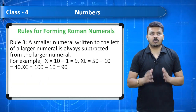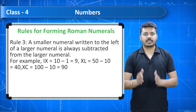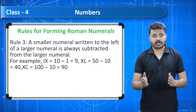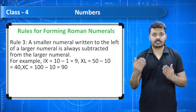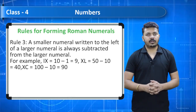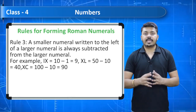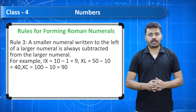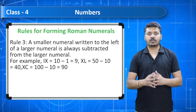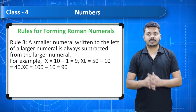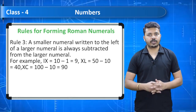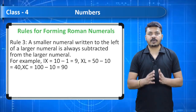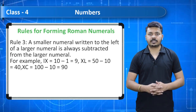Rule 3: a smaller numeral written to the left of a larger numeral is always subtracted from the larger numeral. For example, IX = 10 − 1 = 9. XL = 50 − 10 = 40. XC = 100 − 10 = 90.